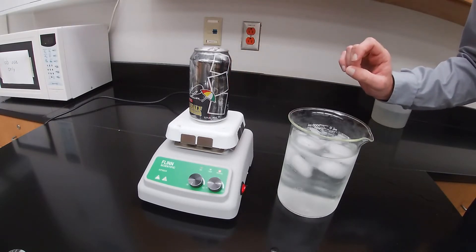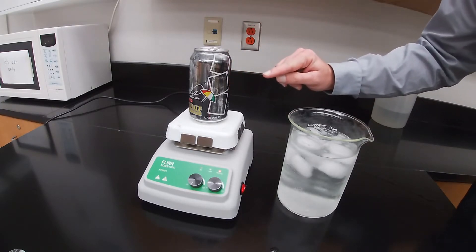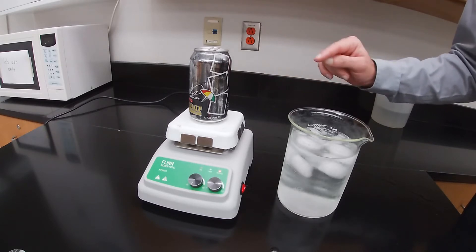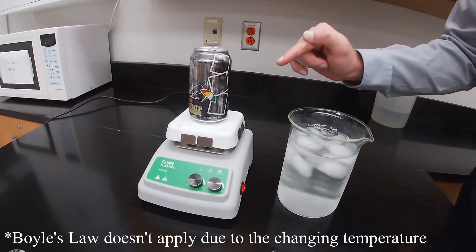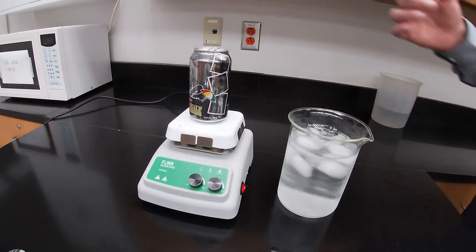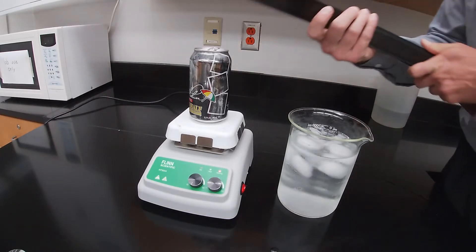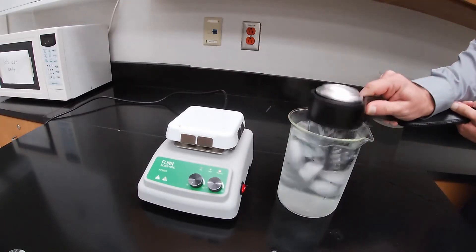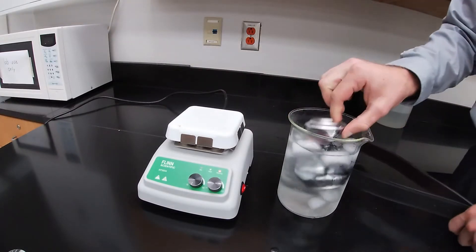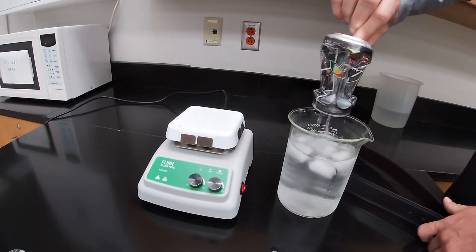The cold water will rapidly decrease the temperature of the gas inside the can. If the temperature decreases, the volume decreases. If the volume decreases, the pressure decreases. If I have low pressure inside the can and high pressure on the outside of the can, the can will be crushed by the atmosphere. So the can has been crushed.